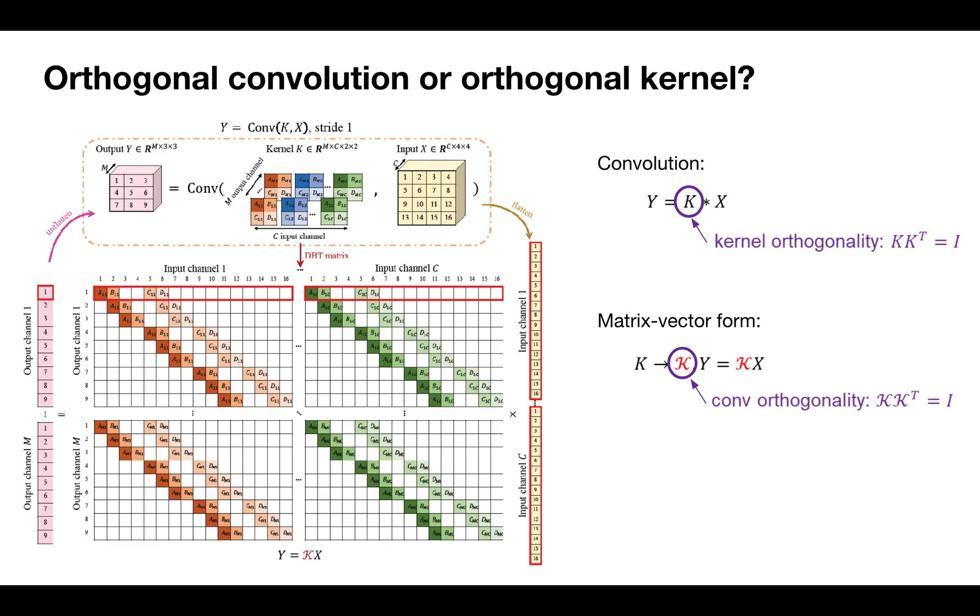Kernel orthogonality requires different filters in the convolutional kernel to be orthogonal, while convolutional orthogonality requires the corresponding DBT matrix to be orthogonal. We show that kernel orthogonality is a necessary but not sufficient condition for convolutional orthogonality.